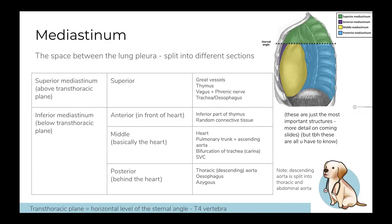The mediastinum: your chest is split into sections. You have the superior mediastinum and inferior mediastinum. The inferior mediastinum is made up of the anterior, middle, and posterior mediastinum. The middle mediastinum is basically the heart. The anterior is in front of the heart and has very little in it. The superior mediastinum contains all the great vessels coming out of the heart. The posterior mediastinum is behind the heart and contains the descending aorta, esophagus, and azygos vein.